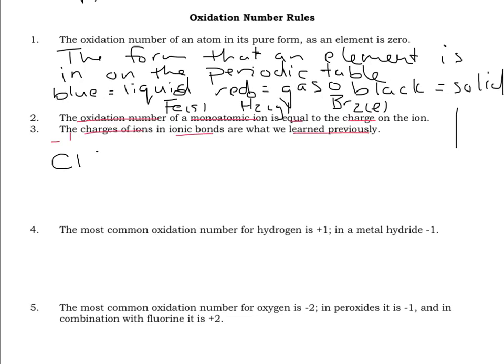The charges we learned previously still apply. For something like magnesium chloride, magnesium is an alkaline earth metal in the second group, so it has a charge of plus two, and chlorine has a minus one charge. It's the same for any ionic compound. For magnesium oxide, the oxidation number on the magnesium is plus two, and the oxidation number on the oxygen is minus two, just as we've learned in previous courses.